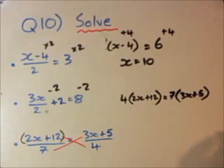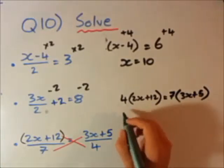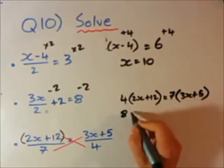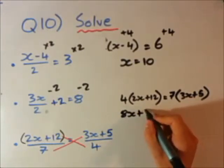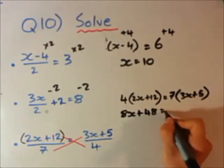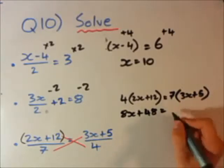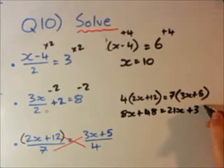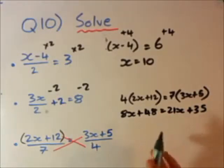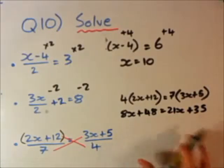So 4 by all of this will be 4 times (2x plus 12) equals, now I've done the cross multiply, 7 times (3x plus 5). Now I'm going to need to expand these brackets. Expand the left hand side first: 4 times 2x is 8x, 4 by 12 is 48. Right side: 7 by 3x is 21x plus 35.